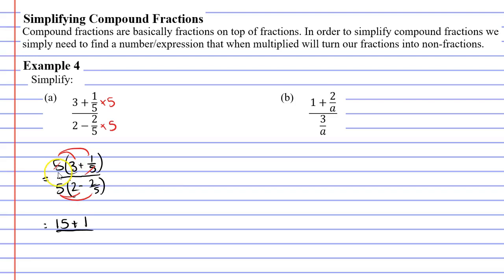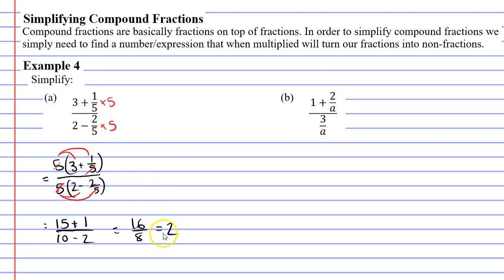Looking at our denominator: 5 times 2 is 10, and 5 times 2 fifths — the 5s cancel each other out — leaving us with 2, so we get minus 2. Now 15 plus 1 is 16 and 10 minus 2 is 8, and 16 over 8 is the same as 2. So question A has simplified to the single number 2.